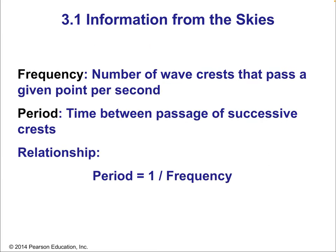If we're talking about the time side of a wave — so far we've seen the spatial side, which is the wavelength and the amplitude — since waves also move in time, they have a frequency and a period. Both have to do with the movement of the wave through time. The frequency is the number of wave crests that pass a given point per second.